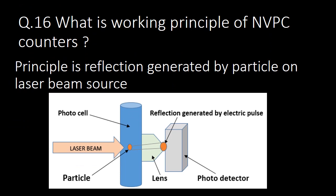What is the working principle of non-viable particle counters? The principle is based on the reflection generated by a particle on a laser beam source. When a particle comes in the flow or direction of the laser beam, it creates a reflection that generates an electric pulse, which is then detected by a photo detector.